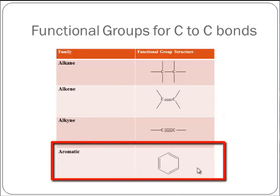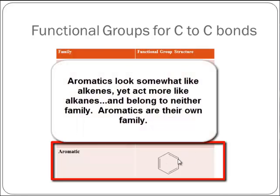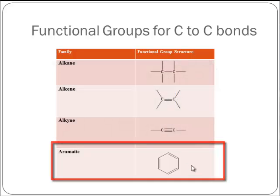If the molecule contains a six-membered ring with alternating single and double bonds all the way around the ring, this structural feature places the molecule in a different hydrocarbon family — aromatic. Aromatics have some similarities to alkenes in appearance, but in terms of their properties they're actually much more like alkanes. They needed to be put in a different family because, in spite of the appearance, they are not alkenes — they are their own family.